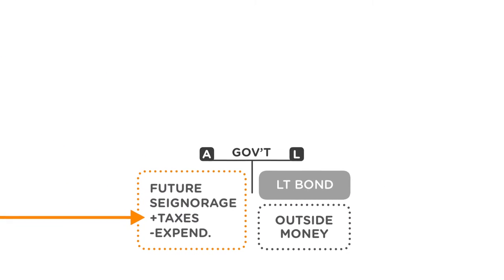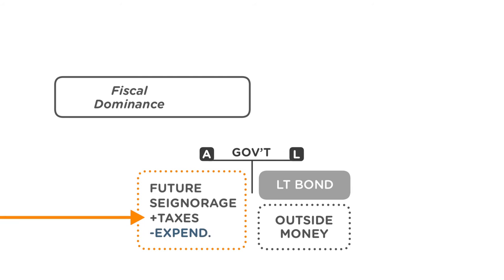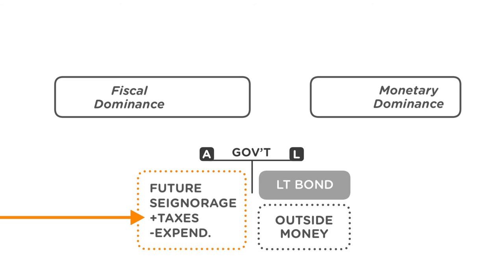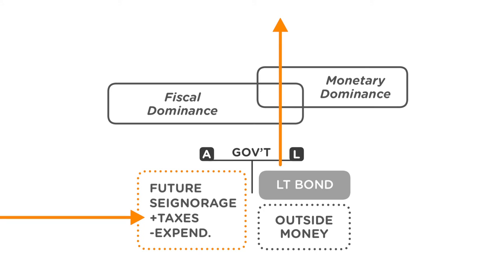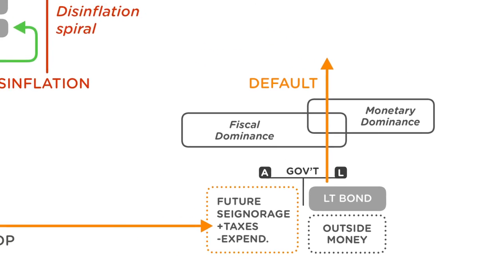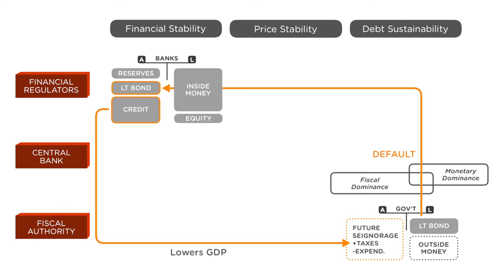Now returning to dominance: under fiscal dominance, the government is reluctant to reduce long-term expenditures or raise taxes. Under monetary dominance, the central bank is reluctant to print additional money to finance government expenditures. If neither party gives up in this game of chicken — represented in our chart by a line going through both fiscal and monetary dominance boxes — the default risk goes up, particularly when part of the debt is inflation indexed. This lowers the value of long-term government bonds. So unlike before, the initial adverse shock to banks' assets now translates into an additional shock to long-term government bonds. Losses are not offset by capital gains on long-term government bonds, but amplified by additional losses.